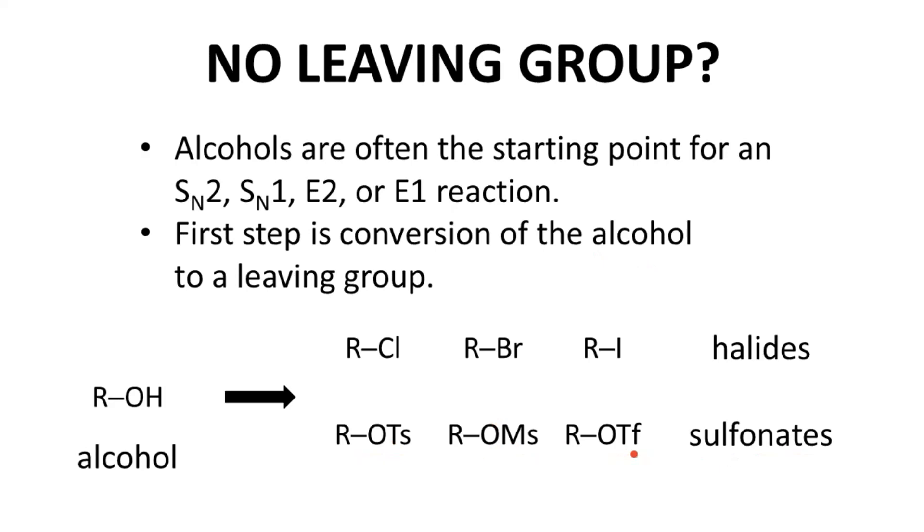All of these, whether a halide or sulfonate, are good leaving groups for the SN2, SN1, E2, and E1. Finally, another way to make an alcohol into a leaving group is through protonation with an acid. That's really common, and we'll see this approach in a couple of our problems in this video.